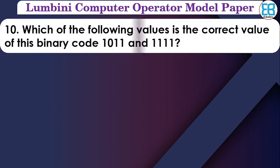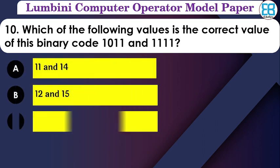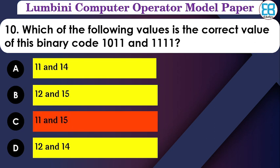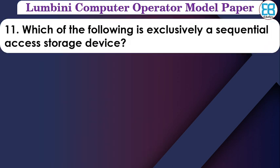Which of the following is the correct value of binary codes 101011 and 11111111? For binary, 101011 converts and 11111111 converts. The options are: 11 and 14, 12 and 15, 11 and 15, 12 and 14. Working out: 101011 = 43 and 11111111 = 255, and the correct option from those listed is identified.